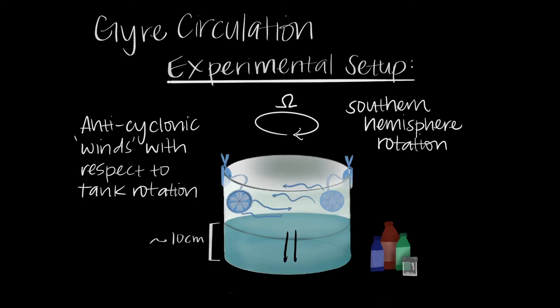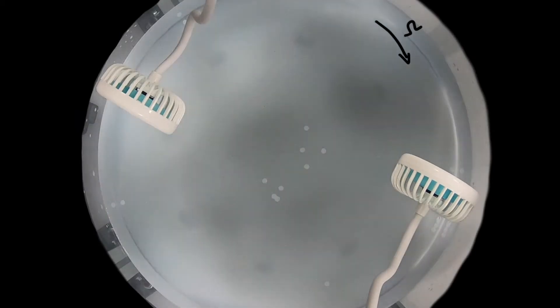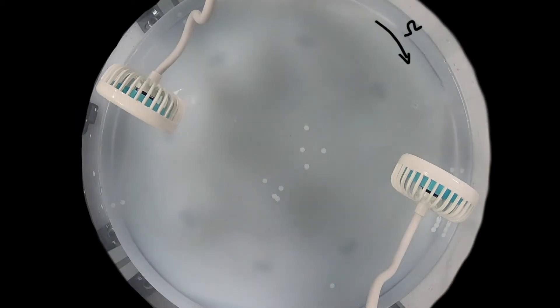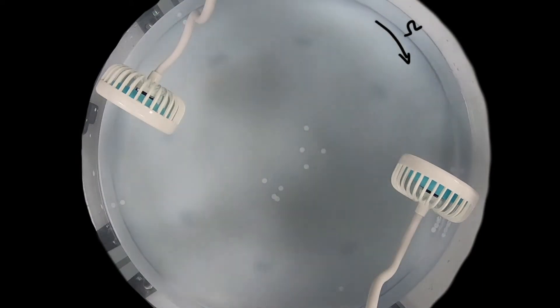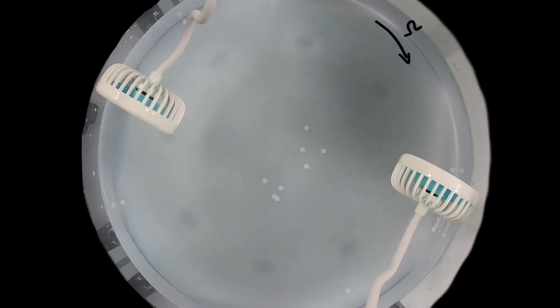Now that we've set up everything, let's move on to take a look at the experiment. This video shows the tank from two different angles. One from the top of the tank in which the camera is spinning at the same rate as the tank itself, and one from the side so that we can see the interior circulation.